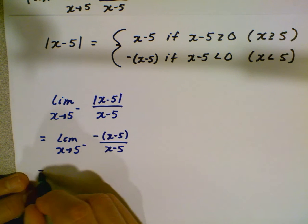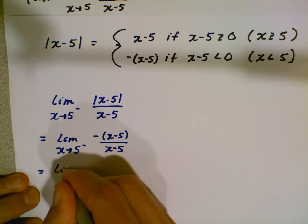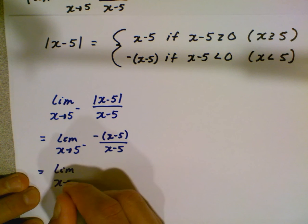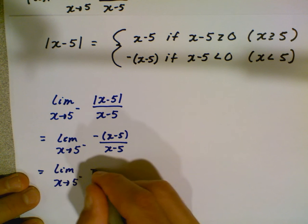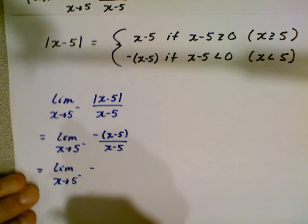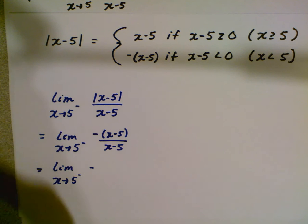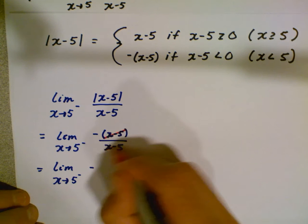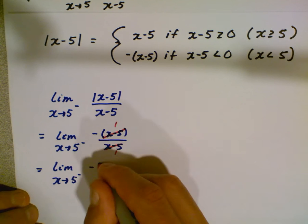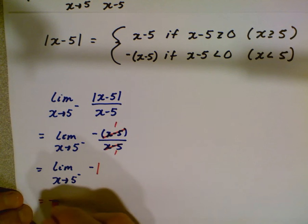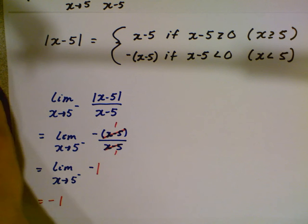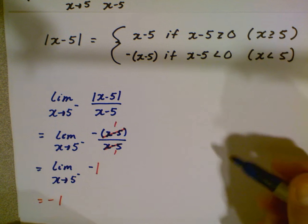Now I'm going to continue on and actually do this problem, so we're going to have a limit as x approaches 5 from the left. Well, we can actually just go ahead and simplify this, the opposite of x minus 5 over x minus 5 becomes negative 1. So that limit is negative 1, taking care of the first part. But if you approach from the negative side...